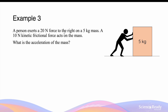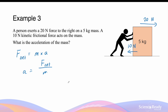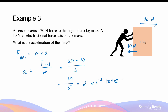A person exerts a 20 N force to the right on a 5 kg mass. A 10 N kinetic frictional force acts on the mass towards the left. What is the acceleration of the mass? Newton's second law states the net force equals mass times acceleration. The net force is equal to 20 N to the right minus 10 N to the left. Then we divide by 5 kg — that's 10 divided by 5, which gives us 2 m/s². The direction is the same as the net force, so towards the right.